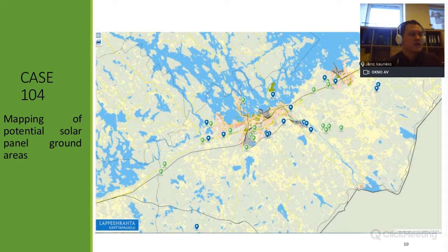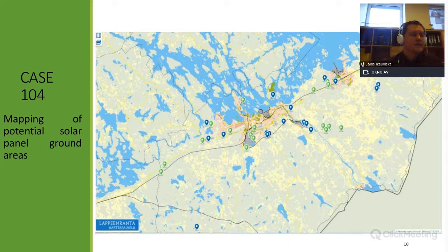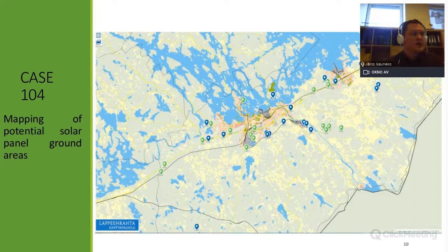One case on solar area mapping was developed by our Finnish project partners in Oulu, where they tried to find the best ground areas for solar panels. The city is very green and wants to install even more solar panels and be more environmentally friendly. They developed 21 criteria to evaluate the city and find the best places for solar panel installation. This methodology is available on the project homepage.